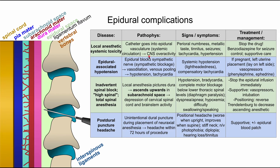This results in CNS overactivity because bupivacaine and fentanyl are administered into the systemic circulation. Signs and symptoms include perioral numbness, metallic taste, tinnitus, seizures, tachycardia, and hypertension — a sympathetic activation picture. Management is to stop the drug immediately, control seizures with benzodiazepines if necessary, and provide supportive care.